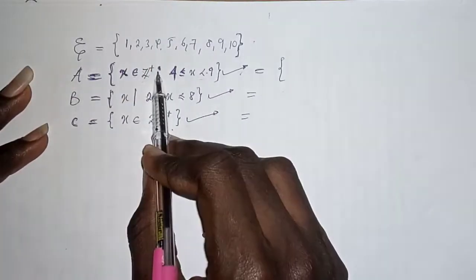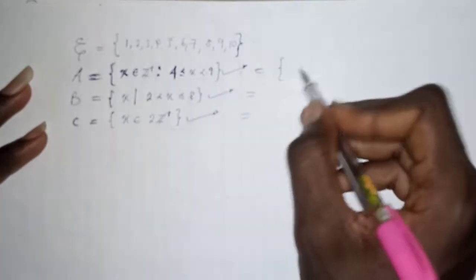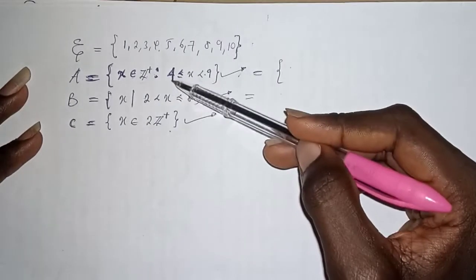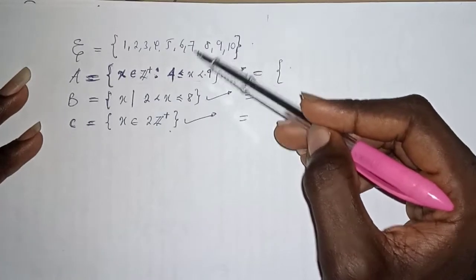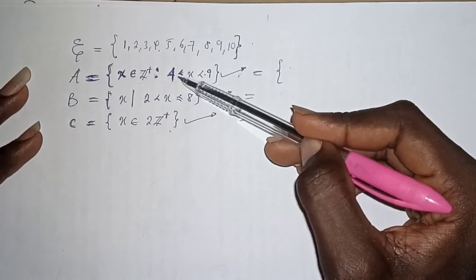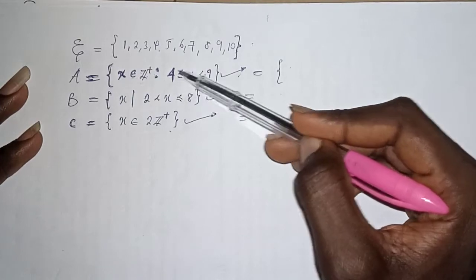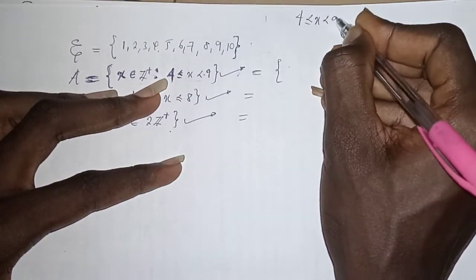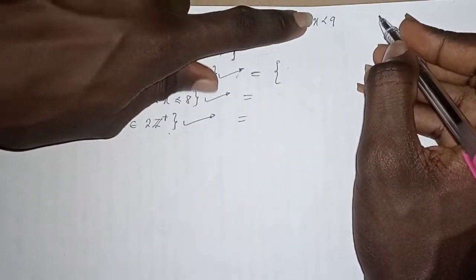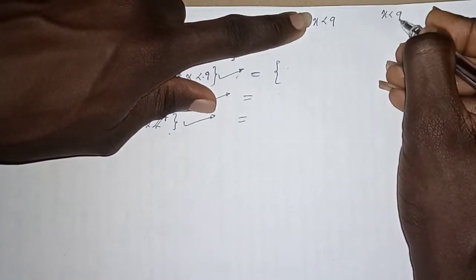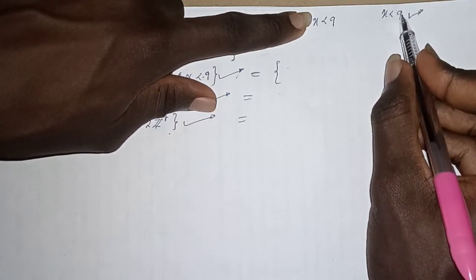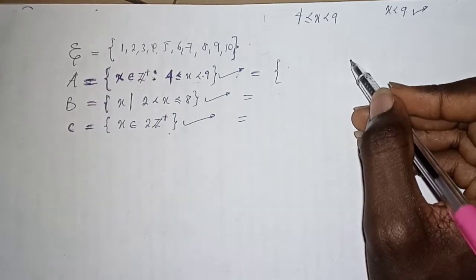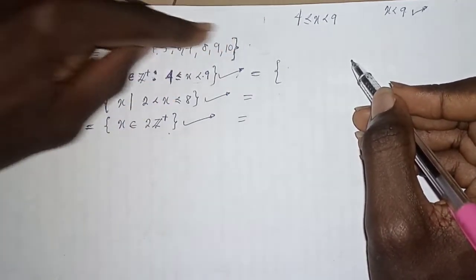Here we have four less than or equal to X, considering the universal set. To list out the members of set A, you must look up to the universal set. We have X is less than nine, so nine is not included, but X can be equal to four. If I cover the left part, I see X is less than nine, so the members less than nine going down to the least in the universal set, which is one.